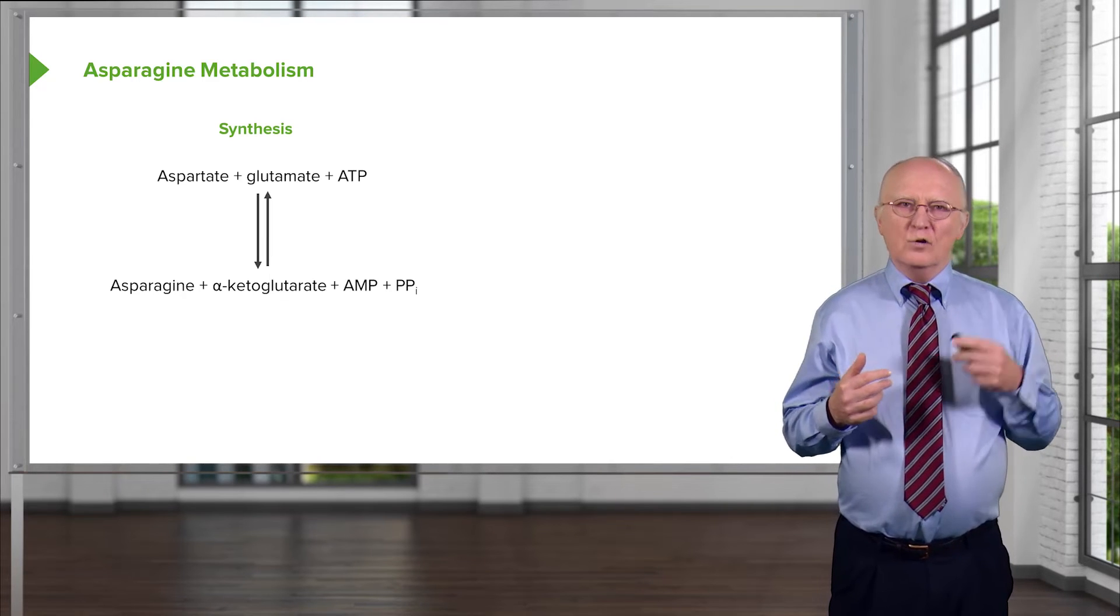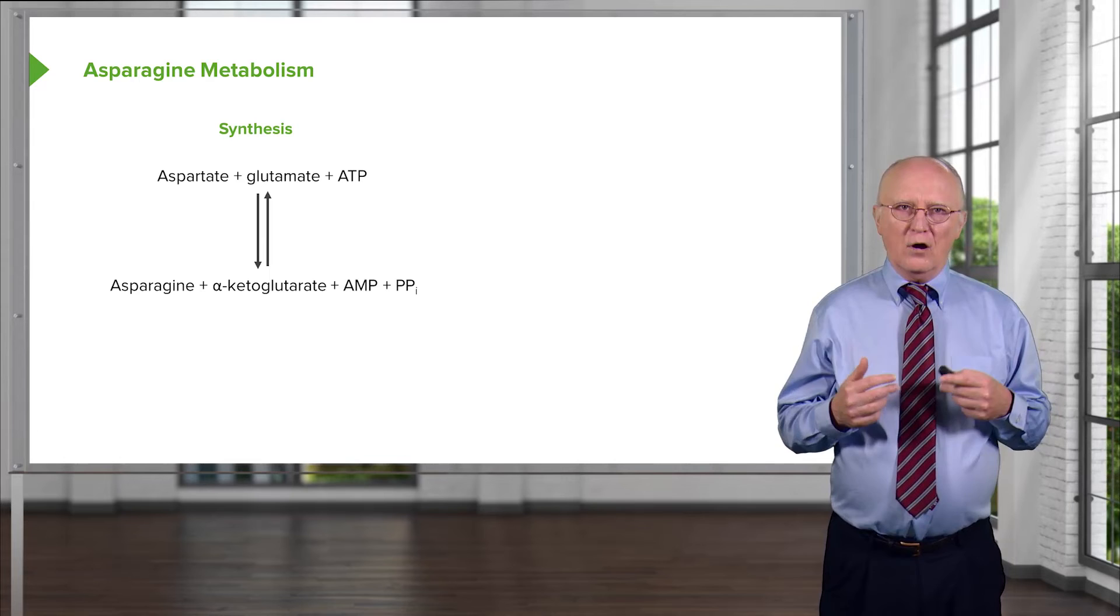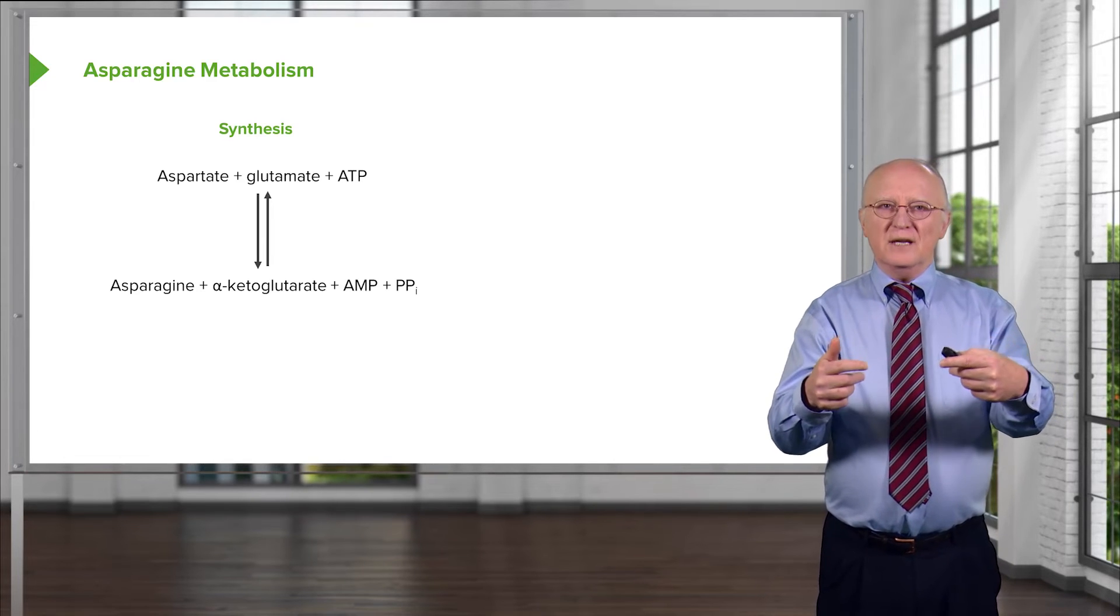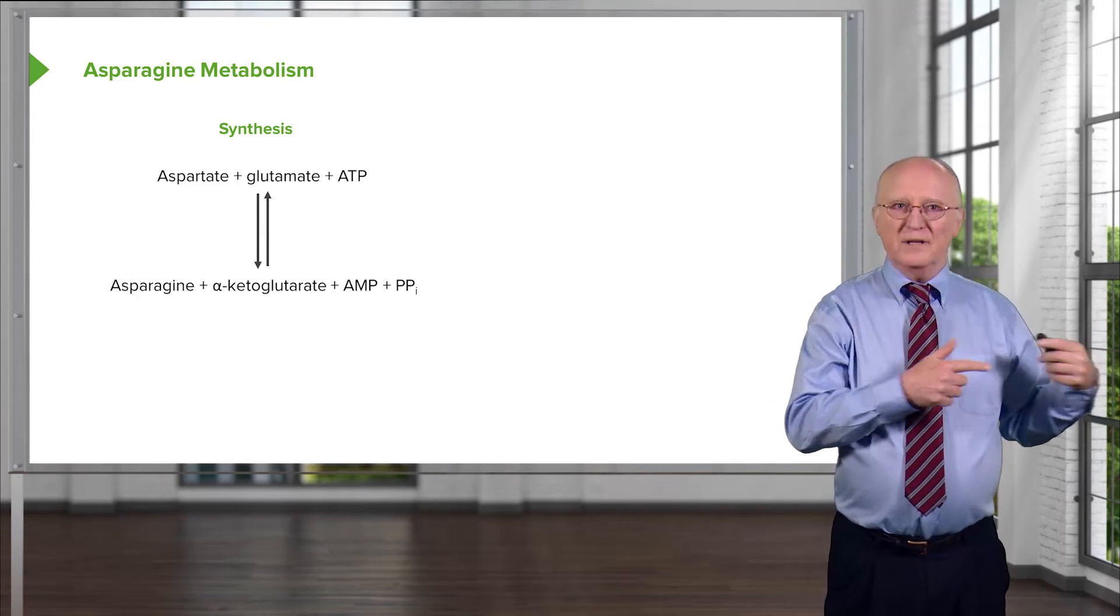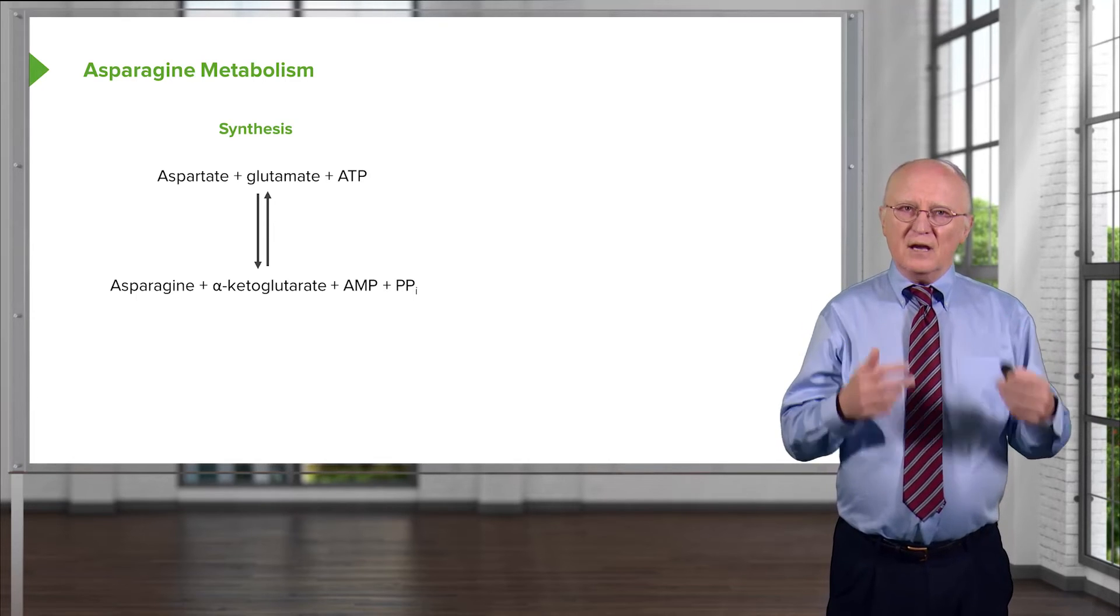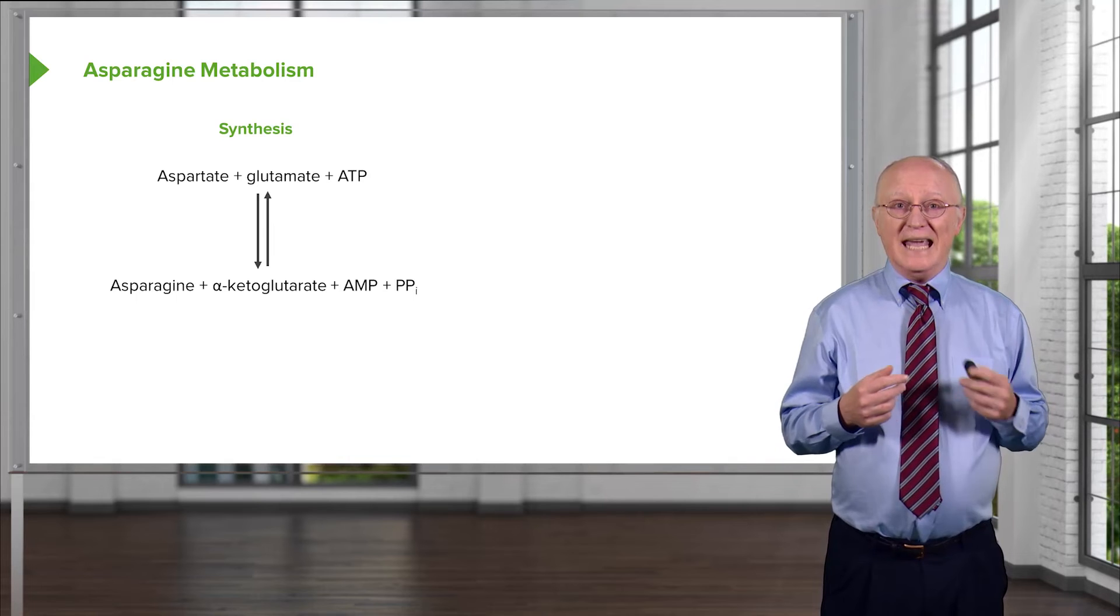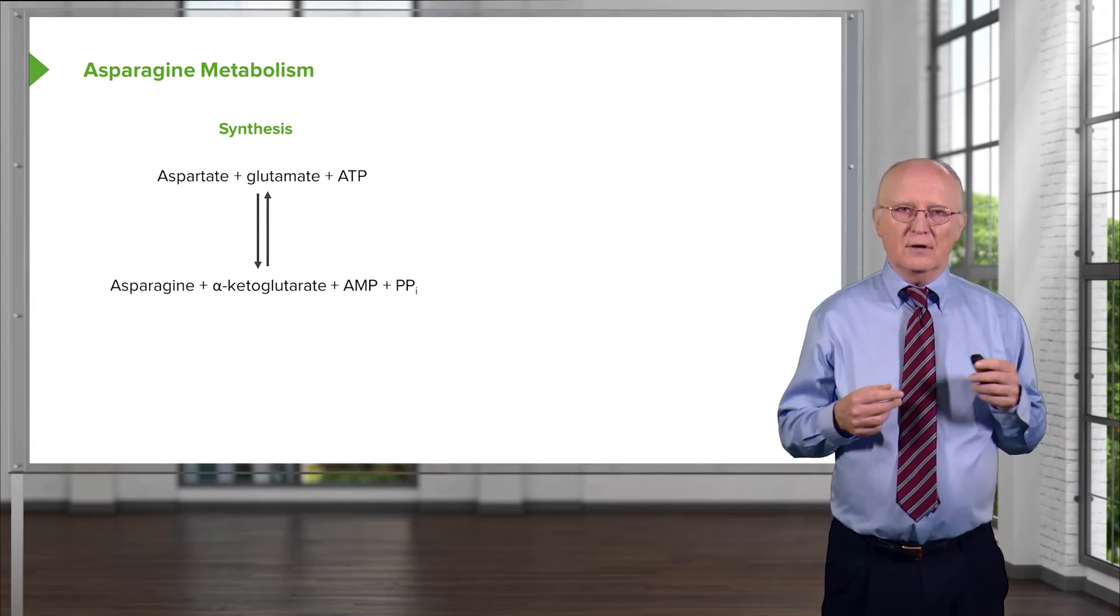Why does that happen? Well, the reason that happens is we're not putting the amine onto the alpha-keto group. We're actually putting the amine onto the carboxamide group at the end of asparagine. That requires energy. And because that requires so much energy, we see ATP becoming AMP. When we see that happen, we know there's a lot of energy involved.